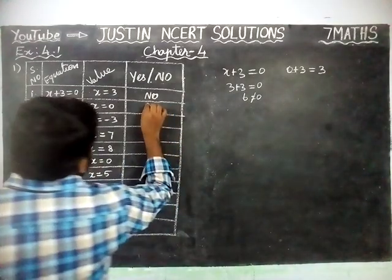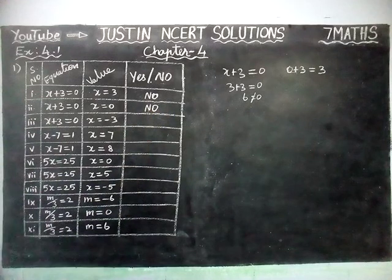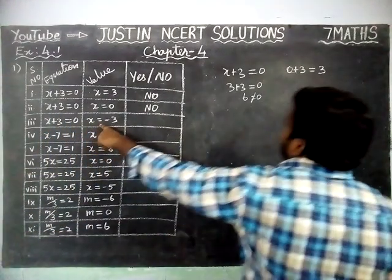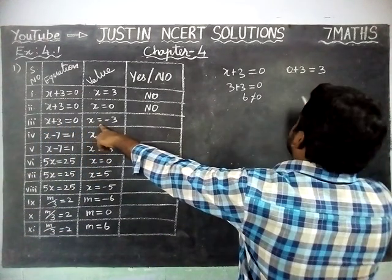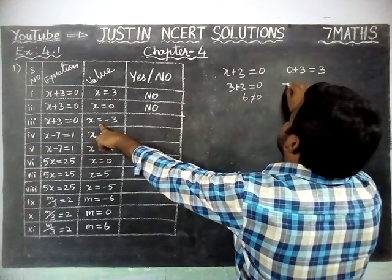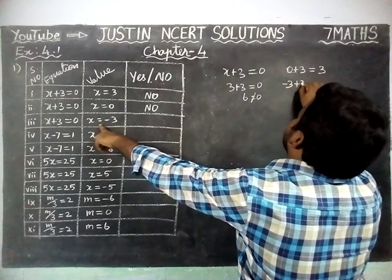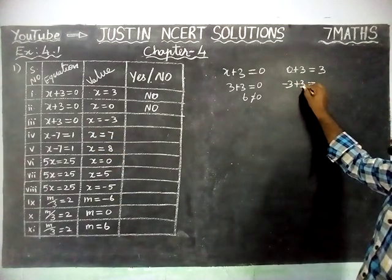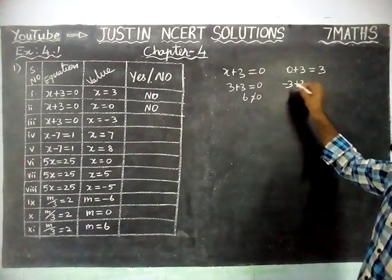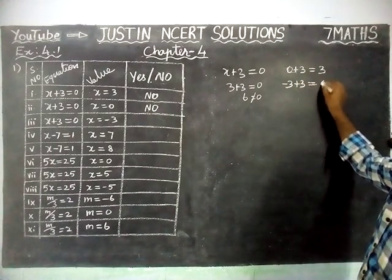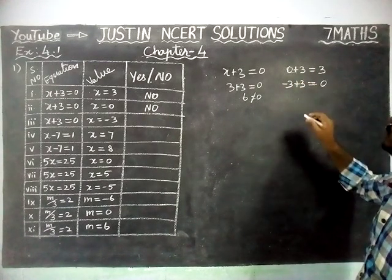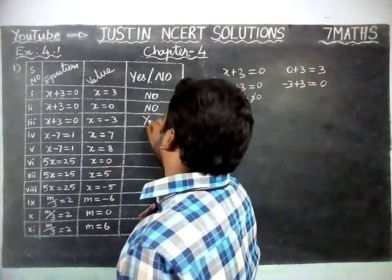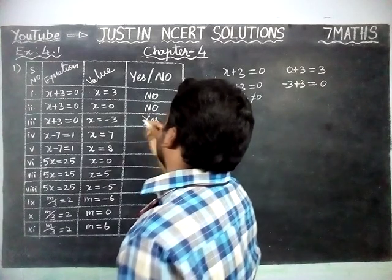Next: X plus 3 is equal to 0, X value is equal to minus 3. We are going to substitute minus 3 — minus 3 plus 3: both have different signs, so we find the difference — 3 minus 3 is equal to 0. So this is correct, yes.